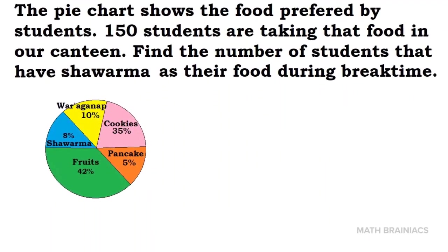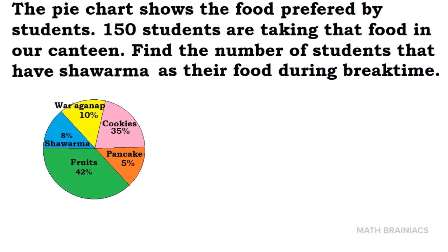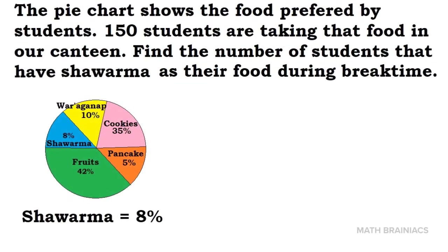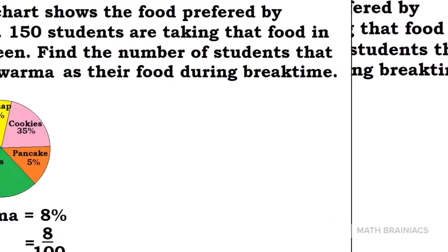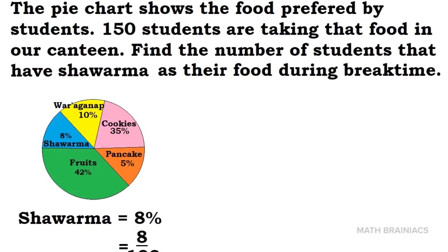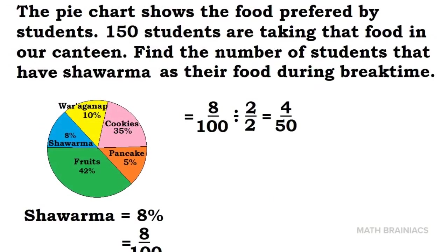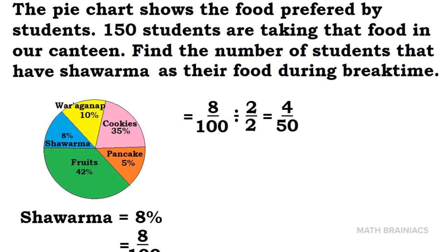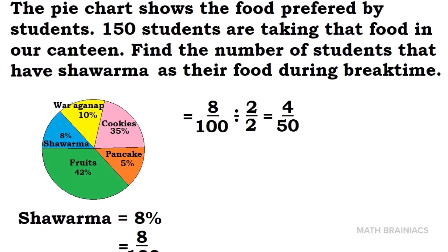What if the question is find the number of students that have shawarma as their food during break time? We are going to take the percentage of shawarma which is 8%. Writing 8% into fraction is 8 over 100. The common factor of 8 and 100 is 2. Therefore, 8 divided by 2 is 4, and 100 divided by 2 is 50.